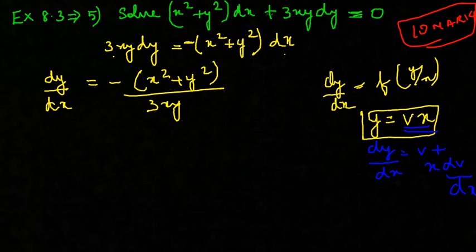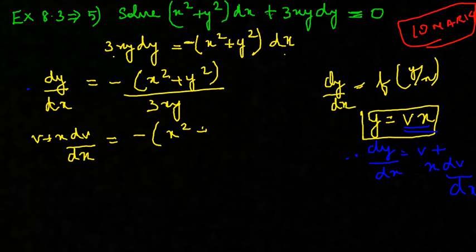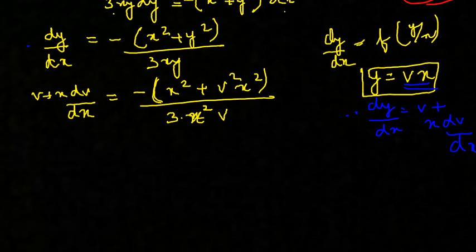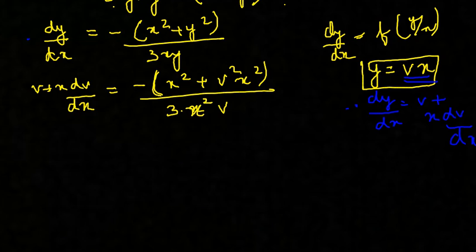This is differentiated using the product rule (uv method): u dv + v du. Now substituting: v + x dv/dx = minus (x squared + y squared) / 3xy. Since y = vx, y squared = v squared x squared, and substituting into the denominator 3xy gives 3x·(vx) = 3x squared v. So we get v + x dv/dx = minus (x squared + v squared x squared) / (3x squared v). We have now eliminated y.